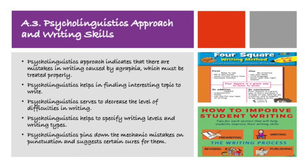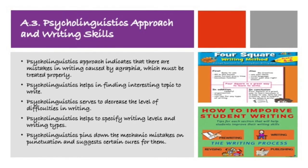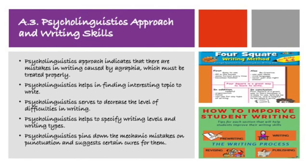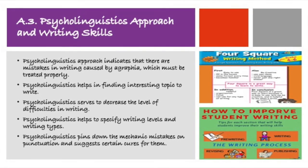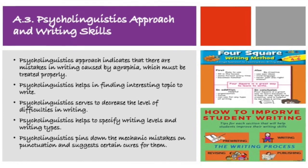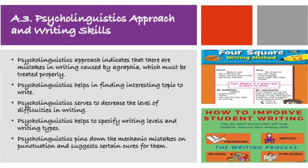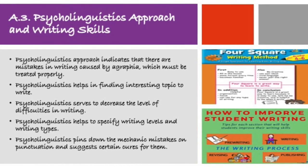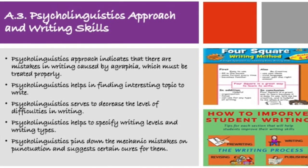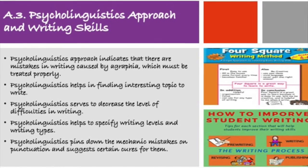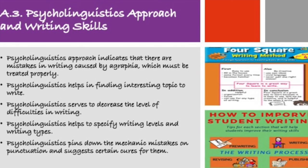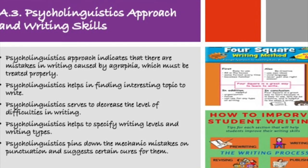Third, psycholinguistics approach and writing skills. Psycholinguistics approach indicates that there are mistakes in writing caused by intergraphia which must be treated properly. Psycholinguistics also helps in finding interesting topics to write and decreases the level of difficulties in writing. Furthermore, psycholinguistics helps to specify writing levels and writing types, and points out the mechanical mistakes in punctuation and suggests certain cures for them.